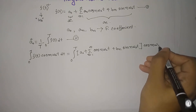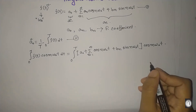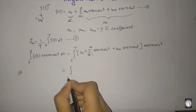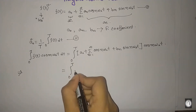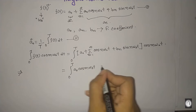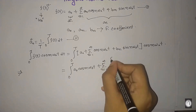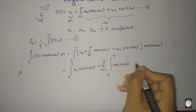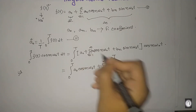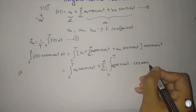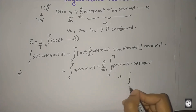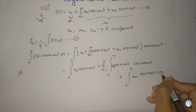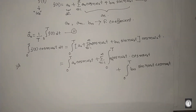To find a_n and b_n, we multiply both sides by cos(mω₀t). On the right side, the first term from 0 to T gives us A0 times cos(mω₀t), plus summation n=1 to infinity of: integral 0 to T of a_n cos(nω₀t) cos(mω₀t) dt, plus integral 0 to T of b_n sin(nω₀t) cos(mω₀t) dt.